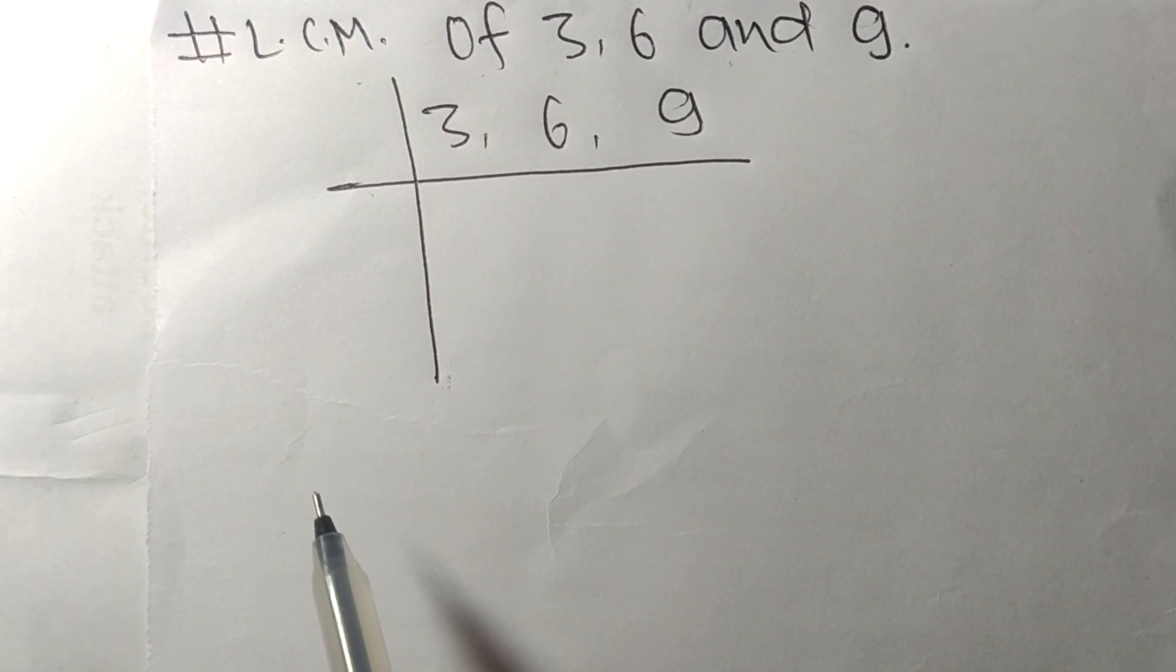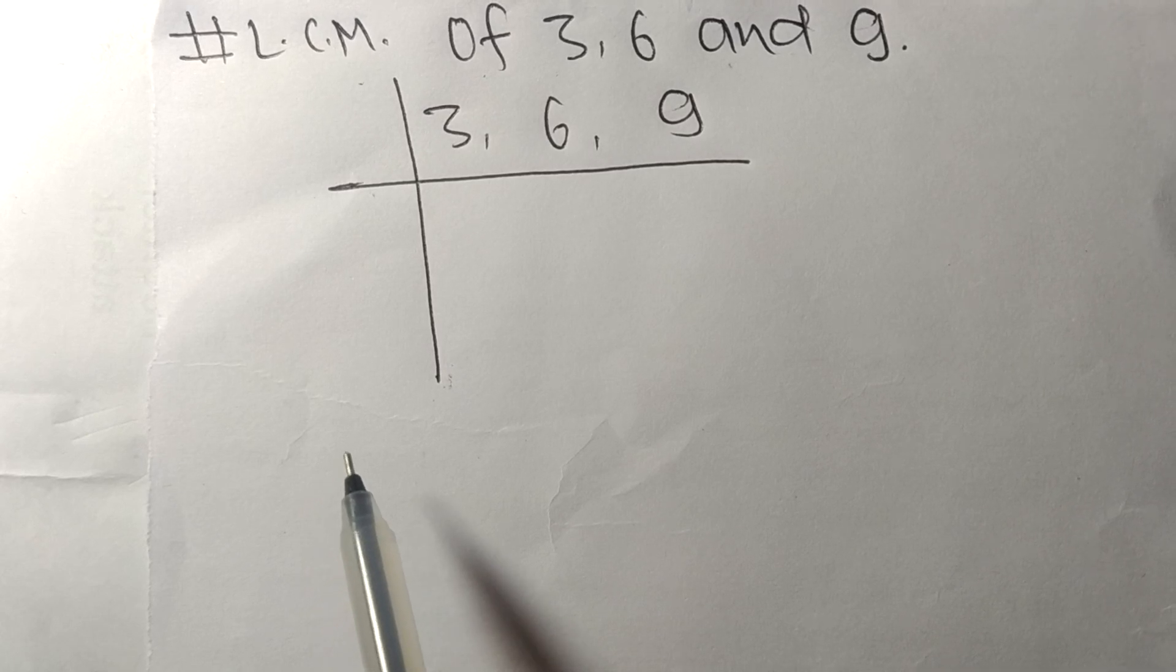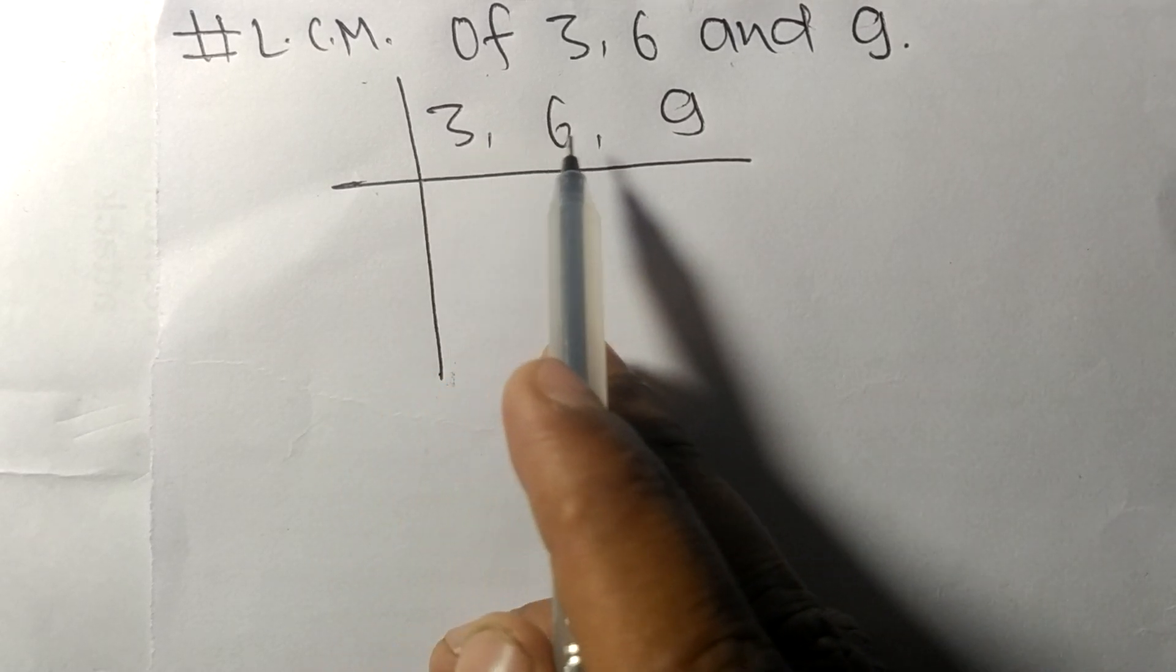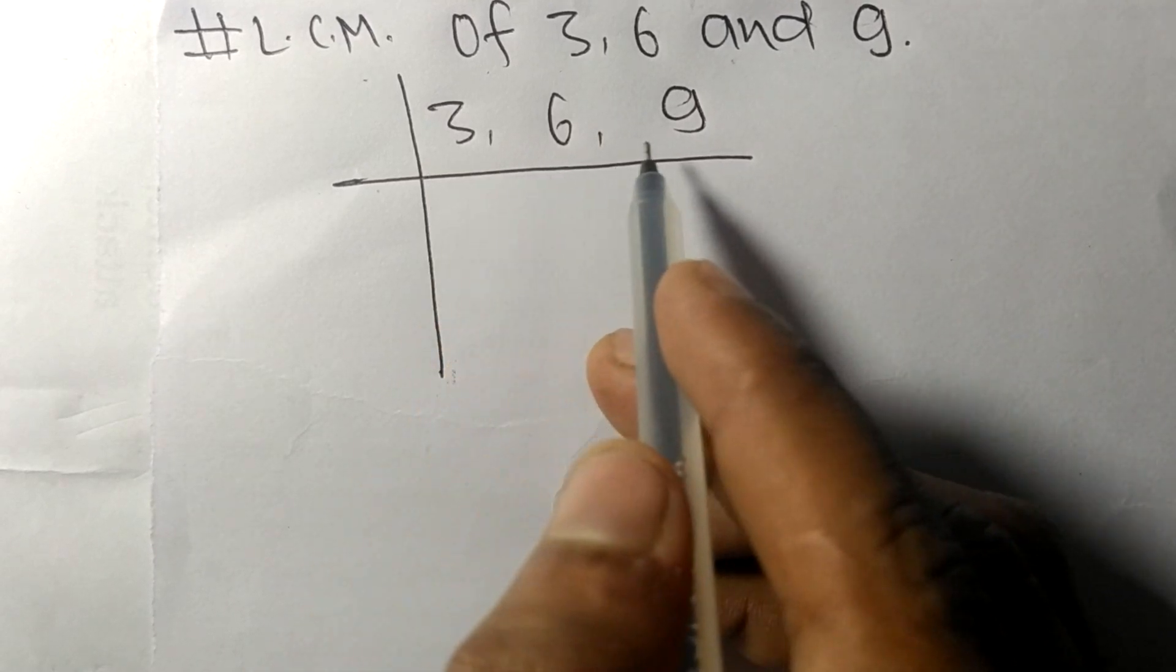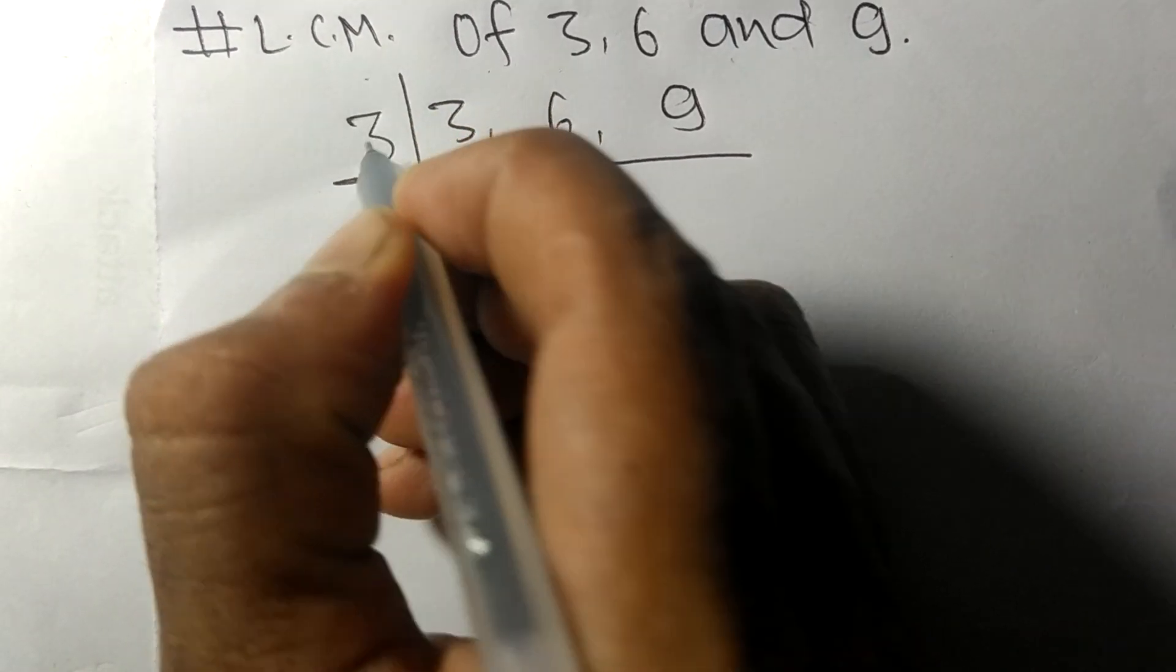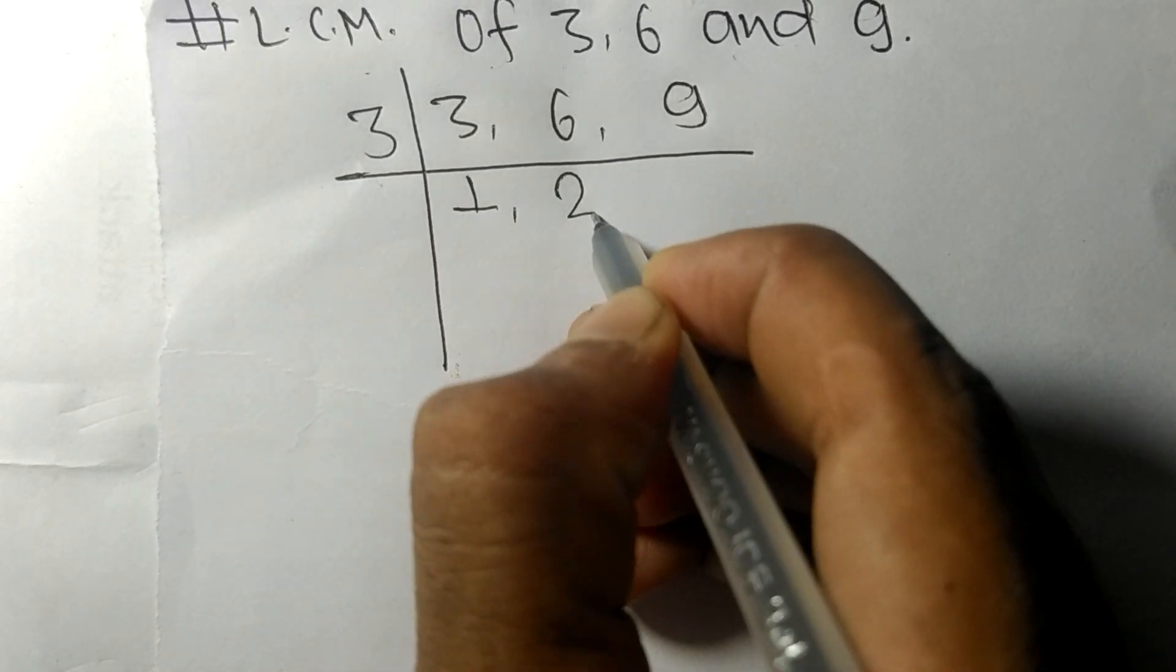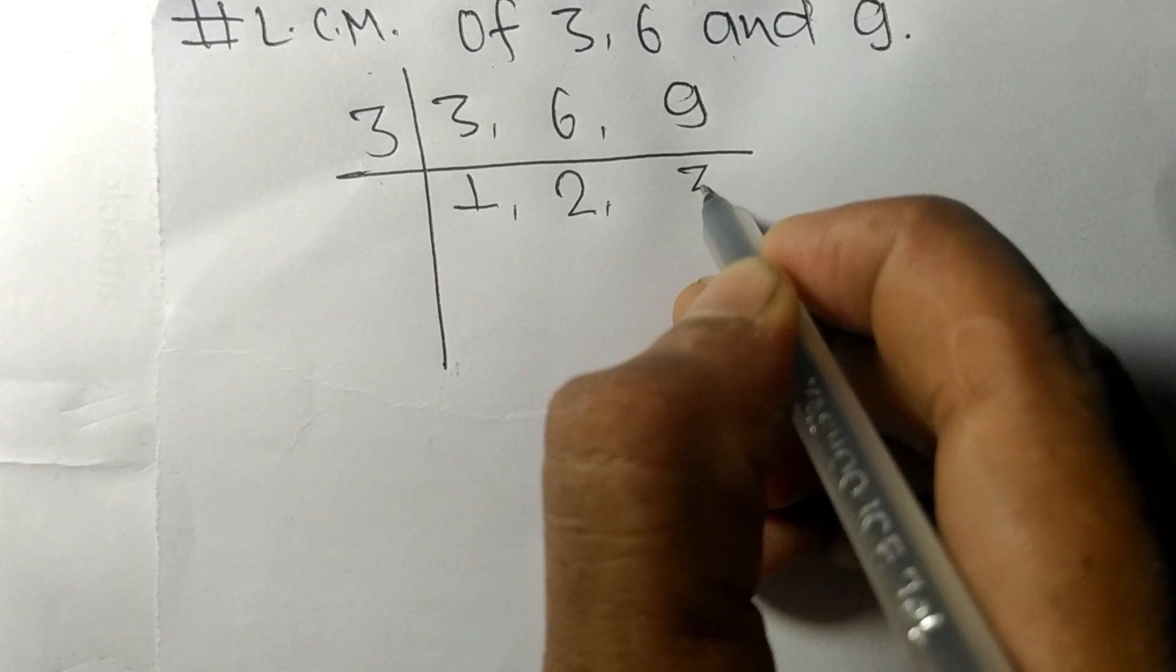To find LCM we have to choose the lowest number that can exactly divide at least any two of these numbers. So 3 is exactly divisible: 3 times 1 equals 3, 3 times 2 equals 6, 3 times 3 equals 9.